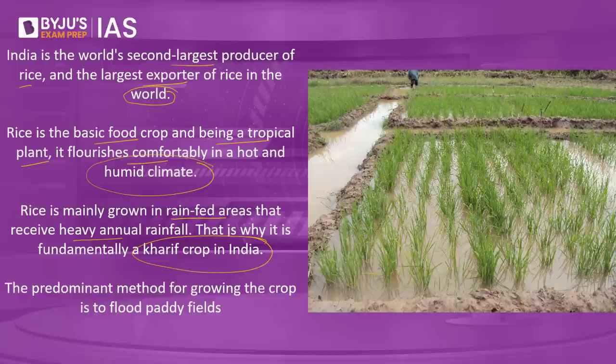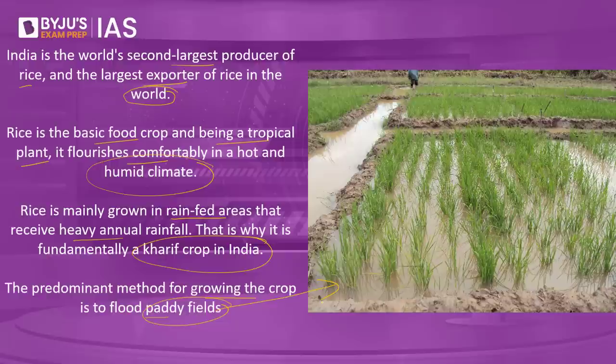How is rice grown in India? There are two methods: the traditional method and the System of Rice Intensification method. In the traditional method, plants are densely seeded in the fields and kept completely flooded throughout the entire growing season. The predominant method for growing the crop is to flood the paddy fields, as shown in the image. Flooding of rice fields is the most effective cultural practice for weed control — the water creates unfavorable conditions for weeds by cutting off sunlight and aeration to the ground, eliminating weed growth.